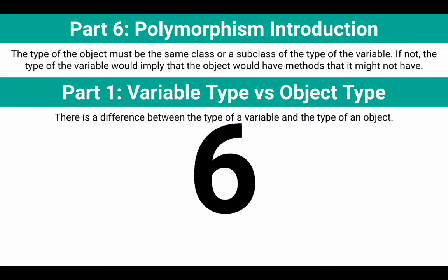The type of the variable is labeled next to the variable. The type of the object is actually what kind of stuffed animal we have. The type of the object must be the same class or a subclass of the type of the variable — that's the left-hand side. If not, the type of the variable would imply that the object would have methods that it might not have. Let's look at an example of this.